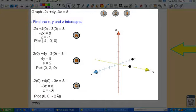And then finally, to find the Z-intercept where the graph crosses the Z-axis, you let X and Y be zero, and you solve for Z, and you plot that point.